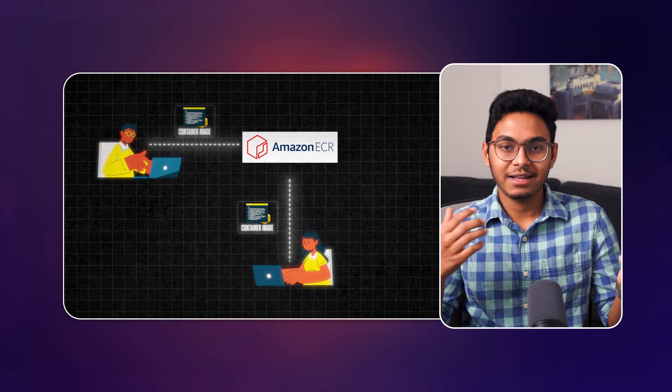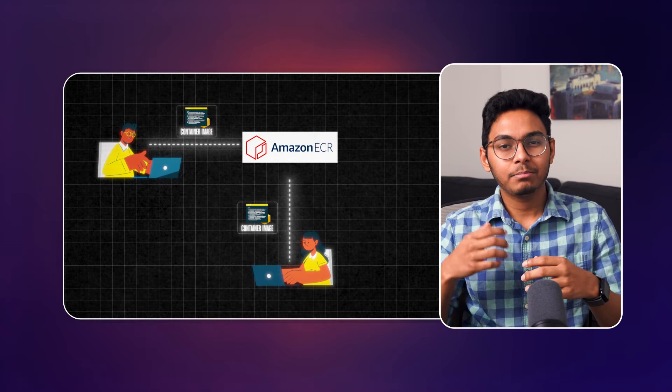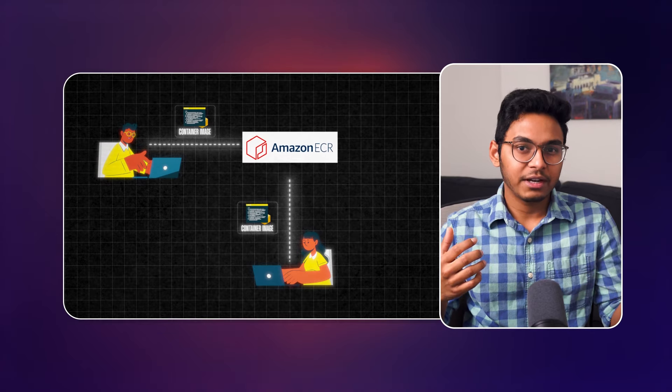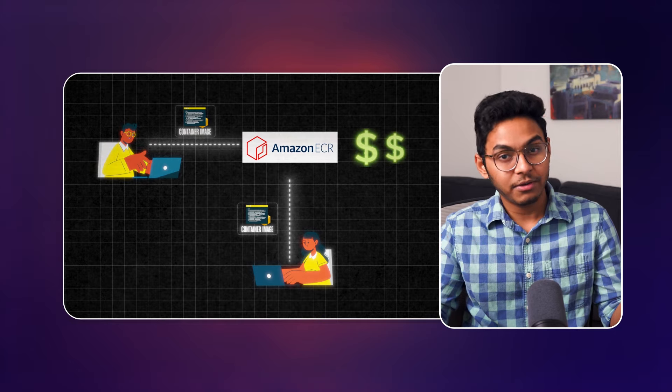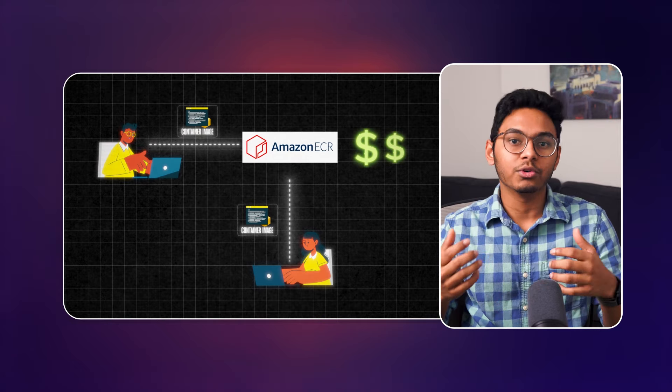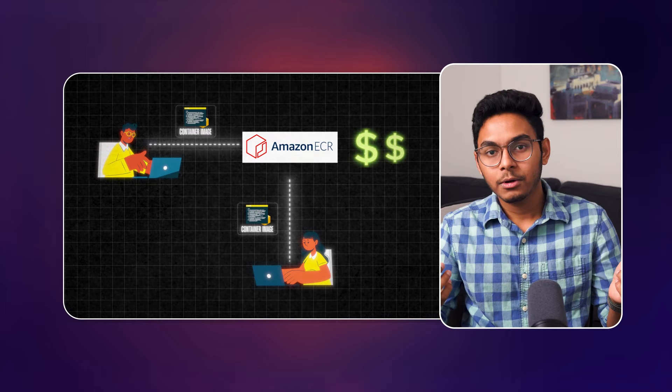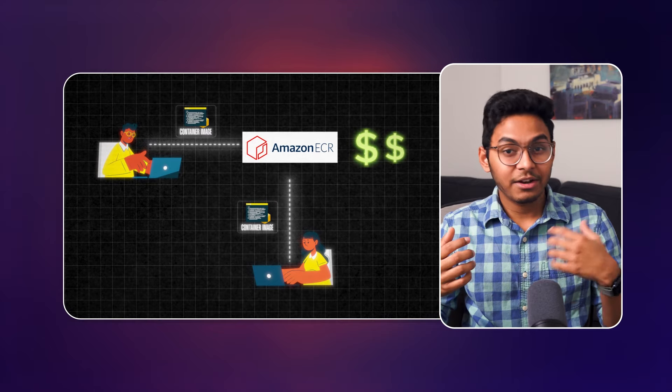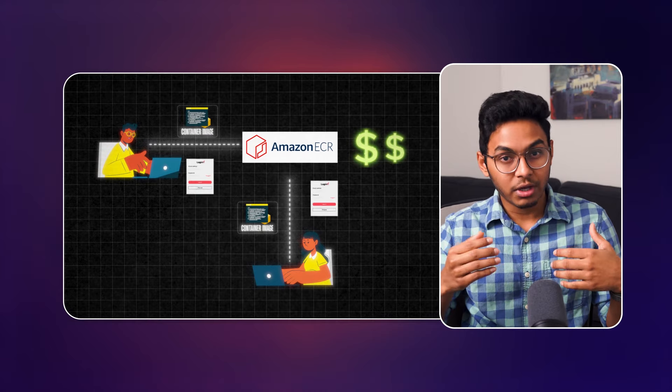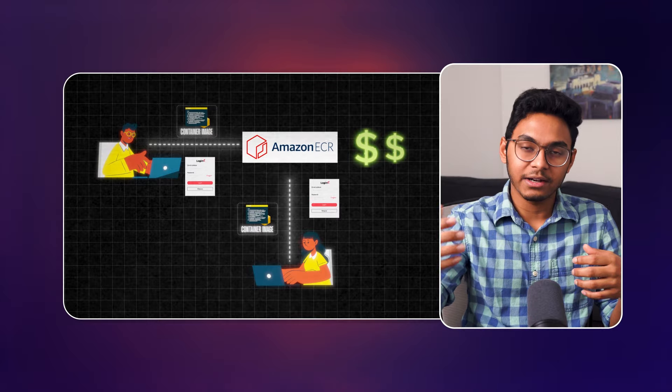In the case where your application is private, your container image should not be hosted on a public container registry like Docker Hub. Instead, you should push it to a private container registry like AWS Elastic Container Registry. Unlike public container registries, private container registries will require you to pay for the storage being used to host your image. Also, private container registries require users to log in before pulling or pushing container images.